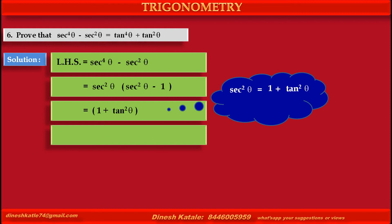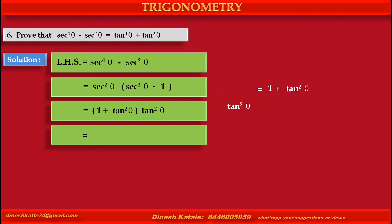So sec squared theta can be written as 1 plus tan squared theta according to identity, into sec squared theta minus 1 can be written as tan squared theta according to identity.